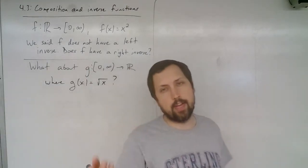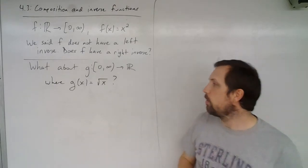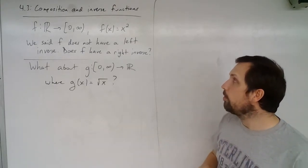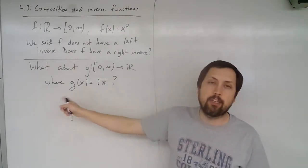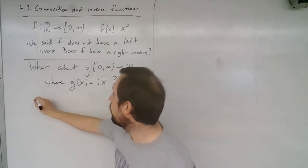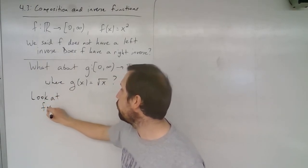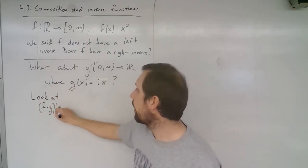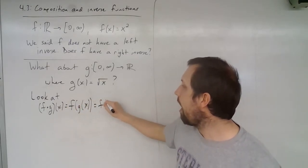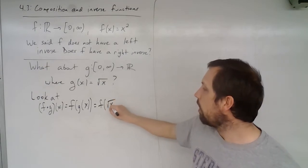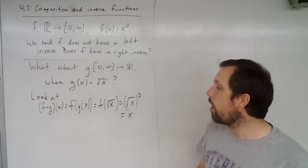Right, so when we think about the square root of x and x squared, those seem to have this opposite property of what we might be looking for. So if we want to see if this is a right inverse, remember that g is going to appear on the right of f. So let's look at f composed with g of x, which is just f of g(x), but we see that's going to be f of the square root of x, which then says the square root of x quantity squared, well that is equal to x.